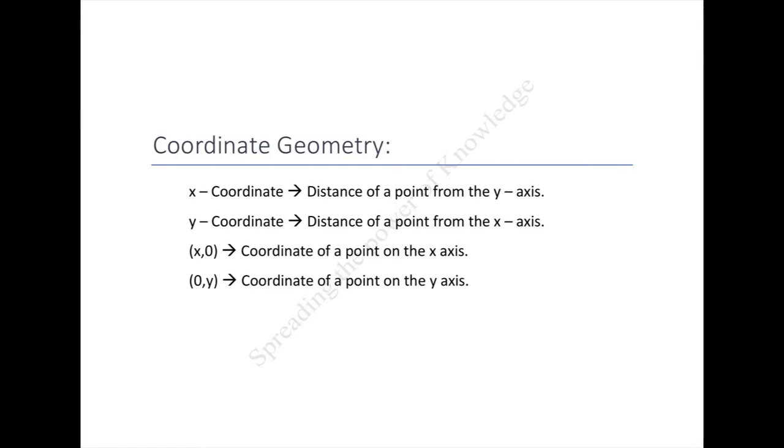We have studied that to locate the position of a point on a plane, we require a pair of coordinate axes. The distance of a point from the y-axis is called its x-coordinate. The distance of a point from the x-axis is called its y-coordinate. The coordinates of a point on the x-axis are of the form (x, 0) and of a point on the y-axis are of the form (0, y).